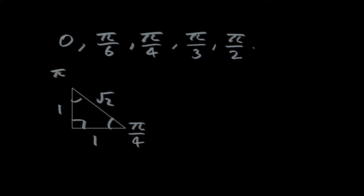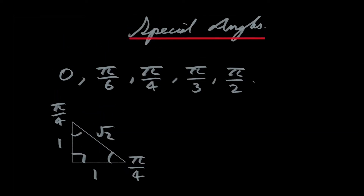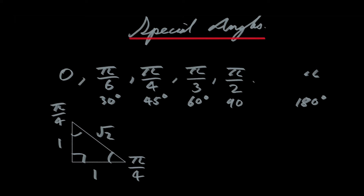It makes sense that both of these angles are the same size because they both span a side of the triangle with the same length — one. In degrees: zero radians is zero degrees, pi over six is 30 degrees, pi over four is 45 degrees, pi over three is 60 degrees, pi over two is 90 degrees, and pi is 180 degrees. Though remember, pi is not typically considered one of the special angles.